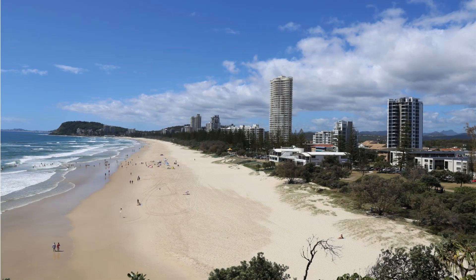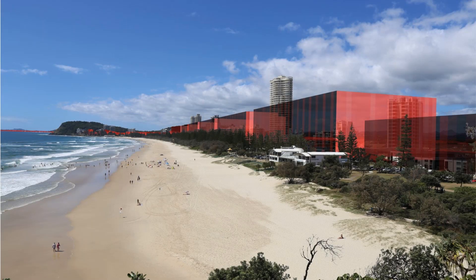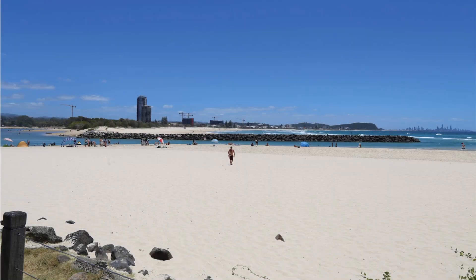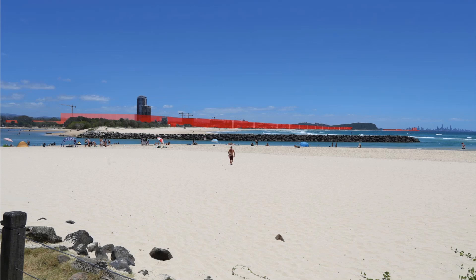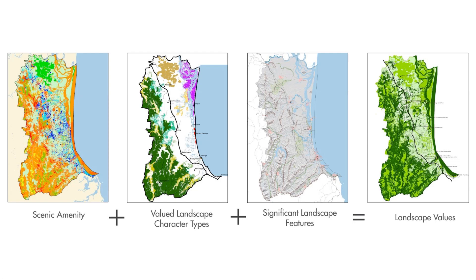The Gold Coast is continually renewing its built form and is likely to undergo significant change involving increased density and height with the planned extension of the light rail corridor in the southern part of the city. There are currently multiple view corridors to landscape features important to the character and scenic amenity of the city, which can be potentially interrupted by the building height overlay. The broad-scale nature of the city adds to the complexity of mapping potential impacts on view corridors.